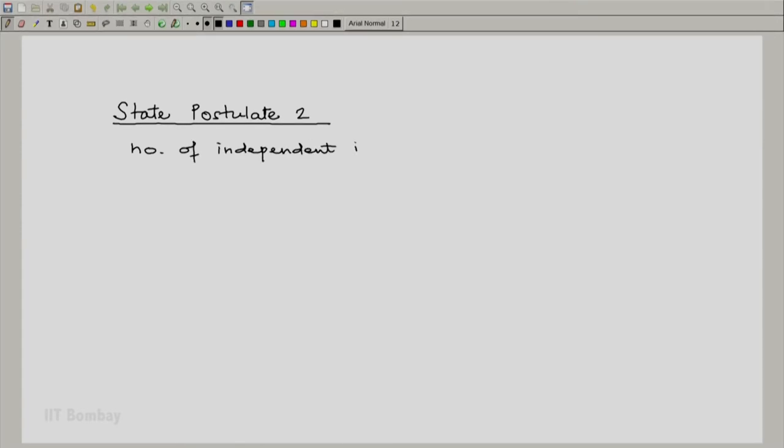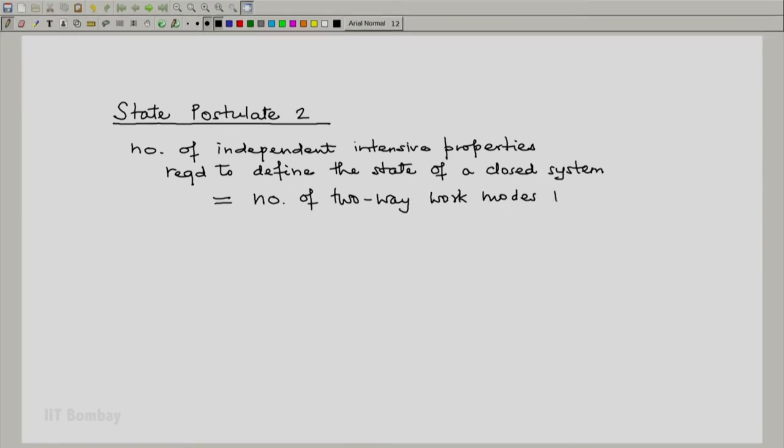The number of independent intensive properties required to define the state of a closed system is number of two-way work modes plus 1. By closed system, we mean a system of fixed mass because mass cannot enter or leave such a closed system. In symbolism, number of properties required is number of two-way work modes plus 1.